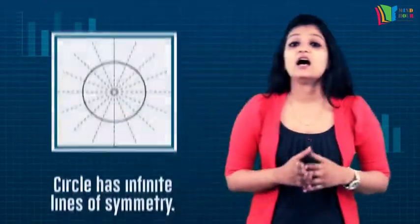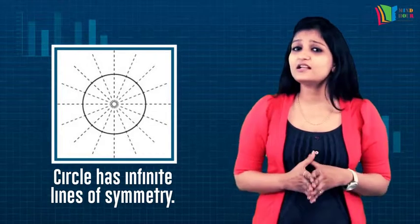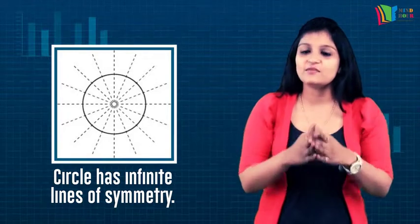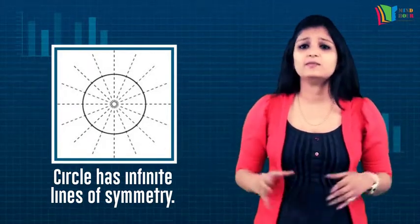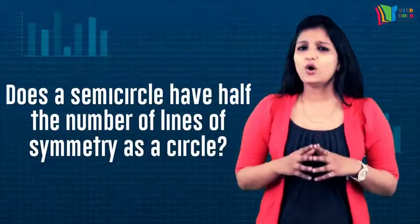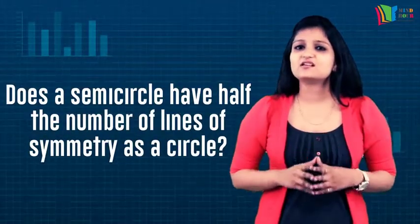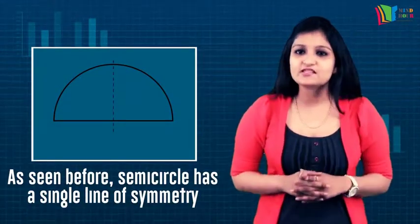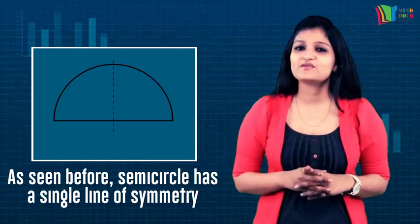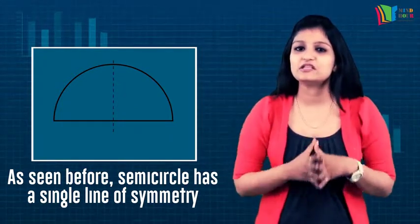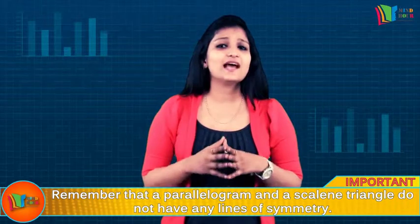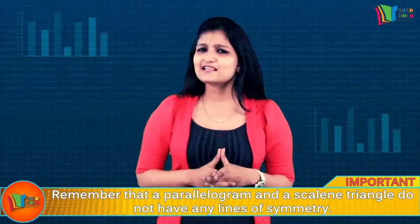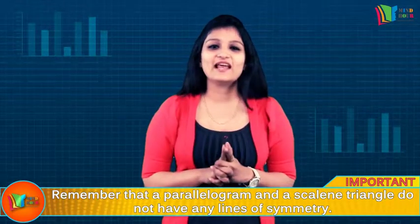Alright students, let's check. How many lines of symmetry does a circle have? Yes, you got it right. Since there are an infinite number of diameters in a circle and the circle is symmetrical about its diameter, it has infinite lines of symmetry. Is it true that a semicircle will have half the number of lines of symmetry? Well, no. A semicircle has only one line of symmetry, namely the perpendicular bisector of the diameter. Let's find out the lines of symmetry for a scalene triangle and a parallelogram. Both have no line of symmetry.